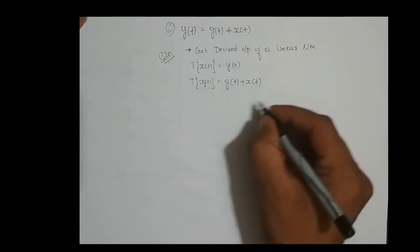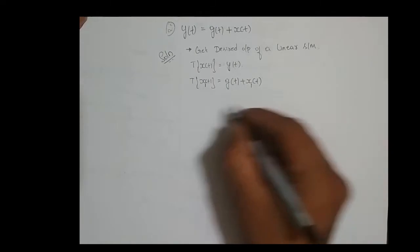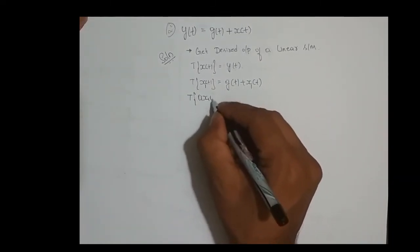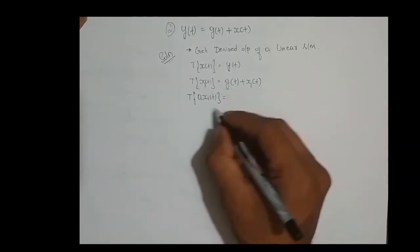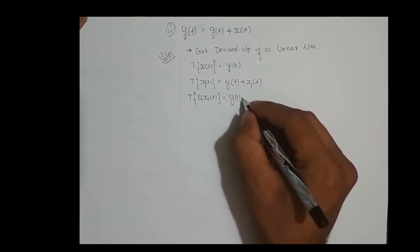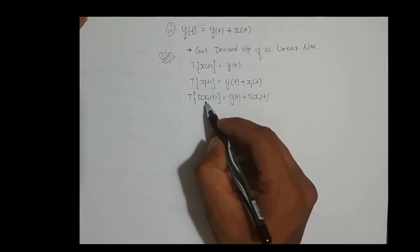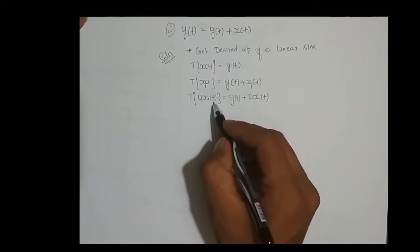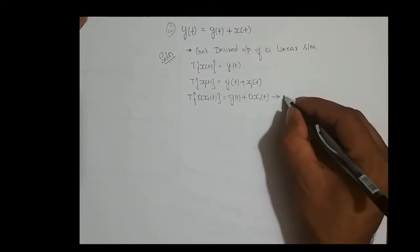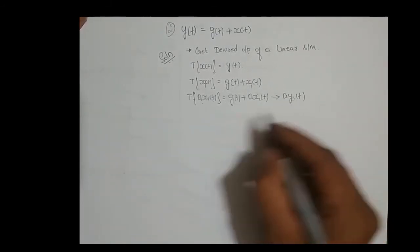If this is the case, transformation of x of t is nothing but g of t plus x of t. Now I will scale the input — a times x of t. If I feed this scaled input to the system, the output is nothing but g of t plus a times x of t. Instead of x of t, I write a times x of t, and the right-hand side changes accordingly. This is nothing but a times y of t. For every scaled input, I should get a scaled output.